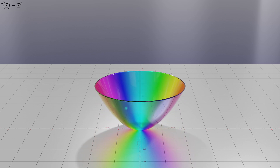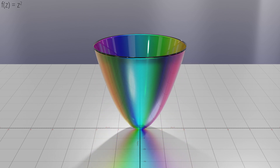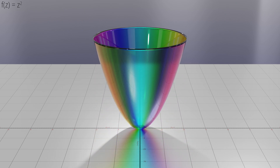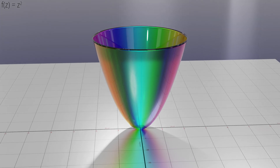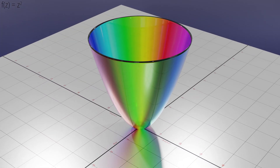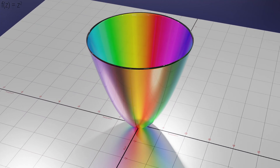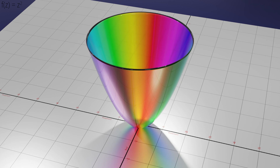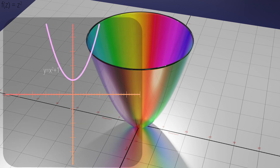Let's plot z squared as a 3D phase portrait. You can see that there is a zero at the origin. What will happen if we add 1 to this equation? A quick look at the real graph shows that z squared plus 1 equals 0 has no real solutions — the line does not cross the x-axis.